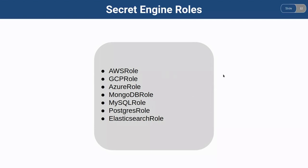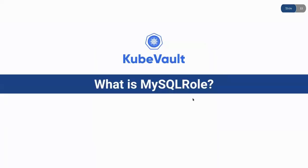In this video, we're going to enable a MySQL secret engine role. A MySQL secret engine role is a Kubernetes custom resource definition which allows a user to create a MySQL DB secret engine in a Kubernetes native way. When a MySQL role is created, the KibVault operator creates a role according to the specification. And if the user deletes the MySQL role, then the respective role will also be deleted from the vault.